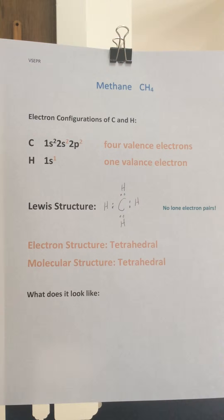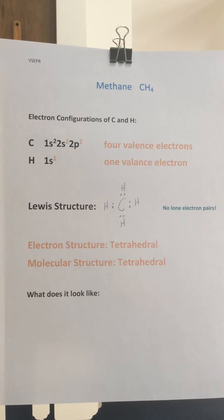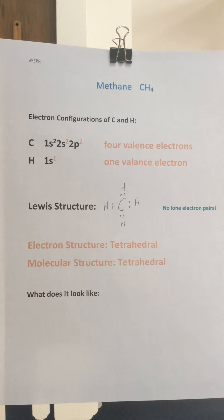Right underneath that I have drawn the Lewis structure for methane. Notice there are no lone pairs — there are four bonds, and each bond has, of course, two electrons in it.